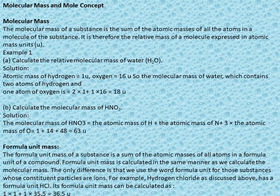Next: formula unit mass. The formula unit mass of a substance is the sum of the atomic masses of all atoms in a formula unit of a compound. It is calculated the same way as molecular mass. The difference is that the term 'formula unit' is used for substances whose constituent particles are ions.